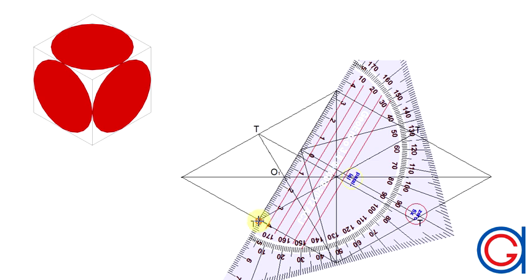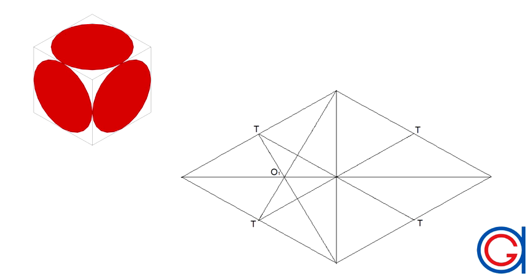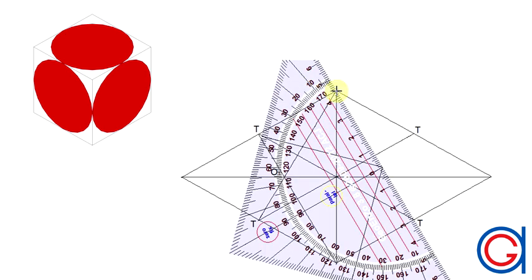Now I am going to join the bottom left tangent t to the top vertex of the rhombus. Again cutting the horizontal diagonal at the same point O1.